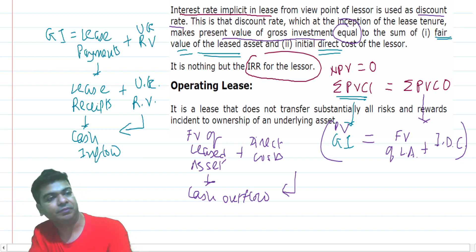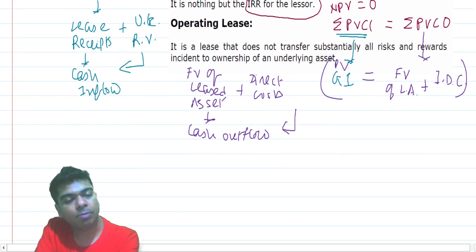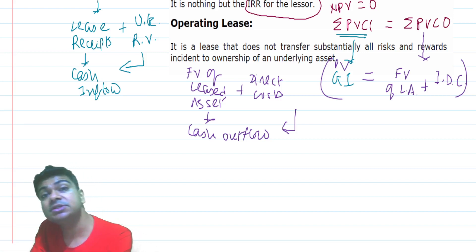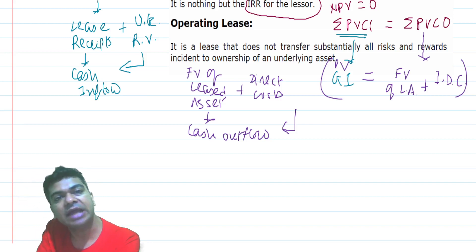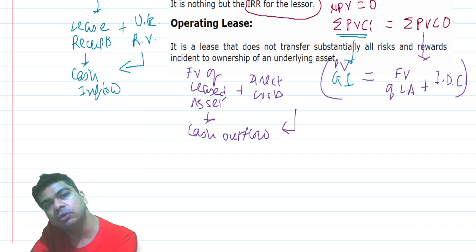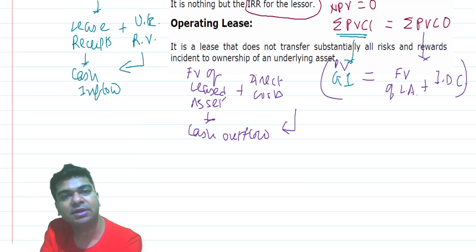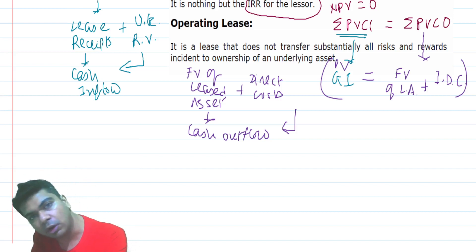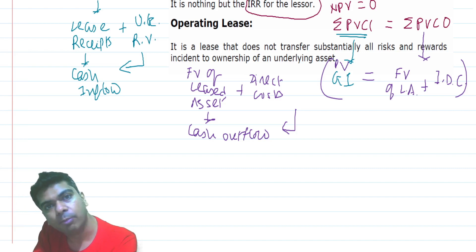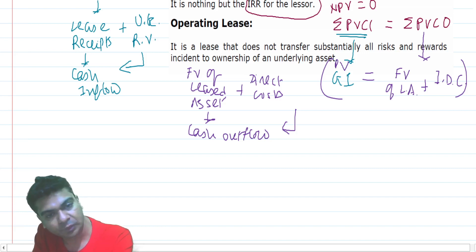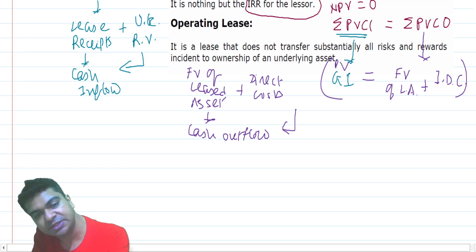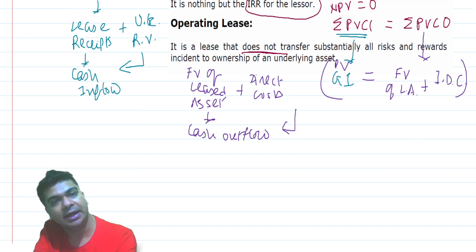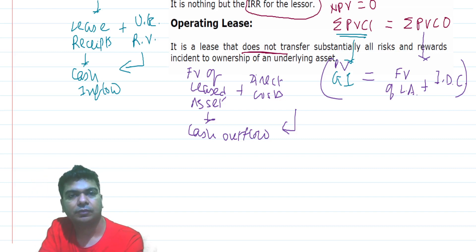Finally, what is an operating lease? We classify leases into finance lease and operating lease. An operating lease is a lease which is other than a finance lease. A finance lease substantially transfers the risk and rewards incident to ownership to the lessee; when such a thing does not happen, it is an operating lease. In other words, if the lease does not transfer substantially all the risk and rewards incident to ownership of an underlying asset to the lessee, it is an operating lease.